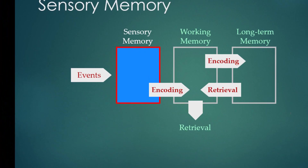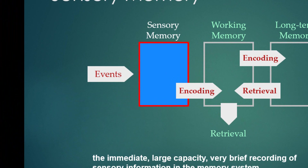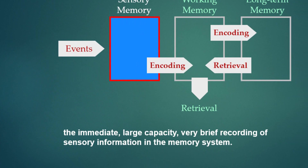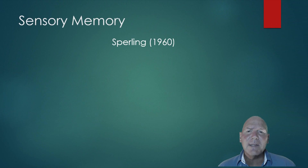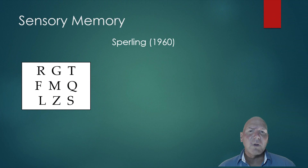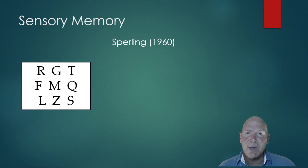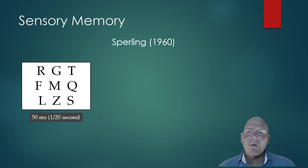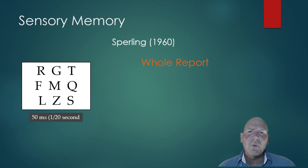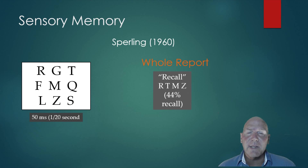Sensory memory is the immediate, large-capacity, very brief recording of sensory information in the memory system. There was a guy named Sperling in 1960 who said we probably remember a lot more in our sensory memory than we give credit for. He did an experiment with nine letters, flashing them for a very brief period — about five milliseconds, one-twentieth of a second. He'd flash them and ask for a whole report: what can you remember? On average, about 44% of the letters could be remembered without being asked which specific ones.